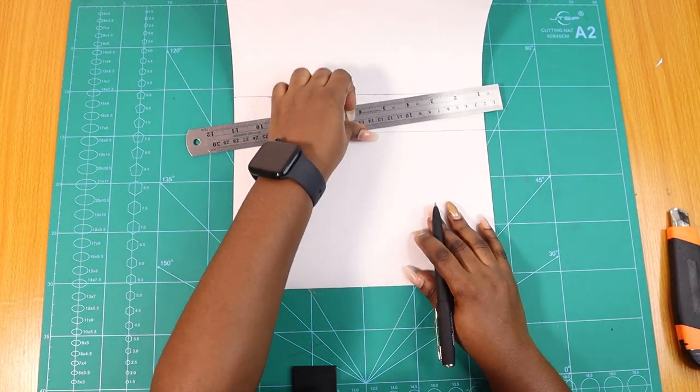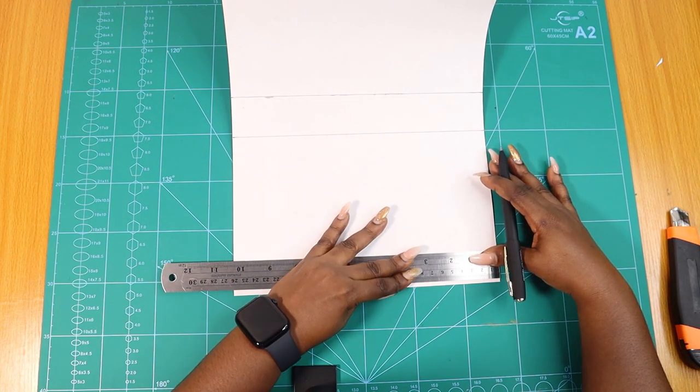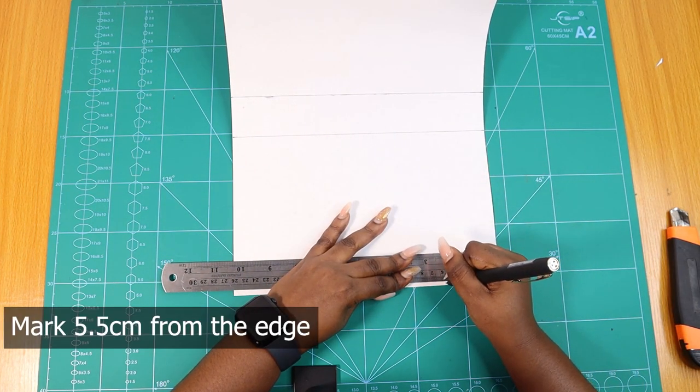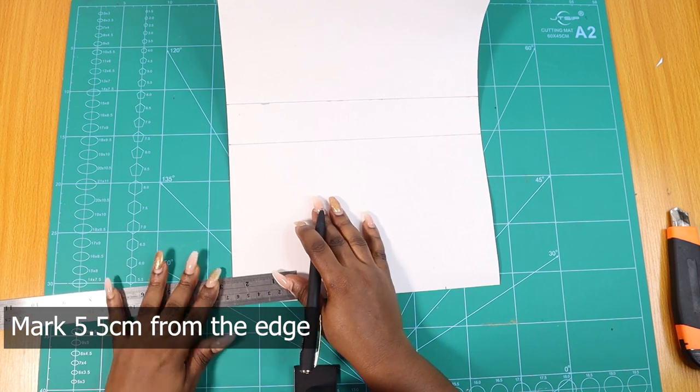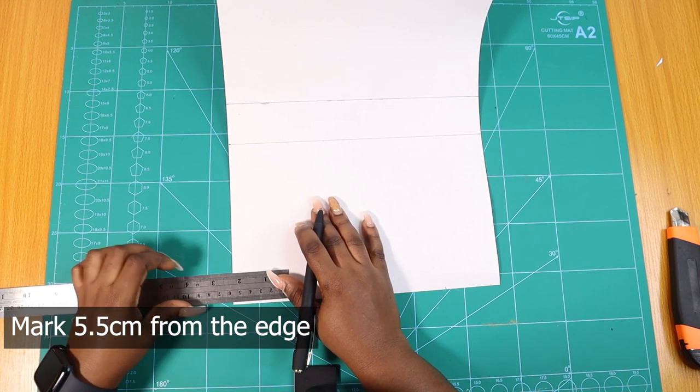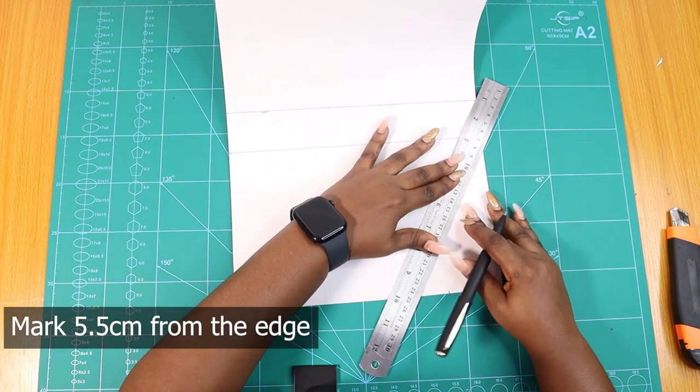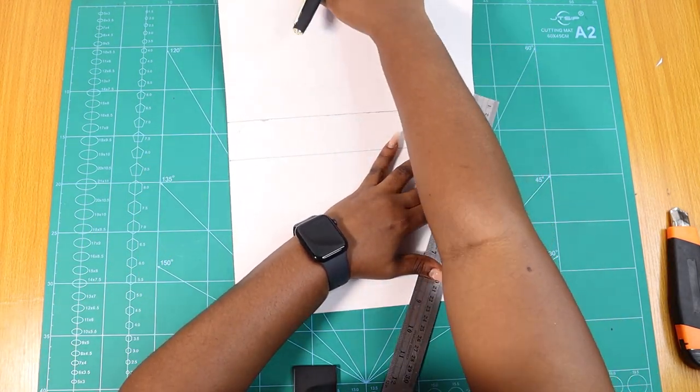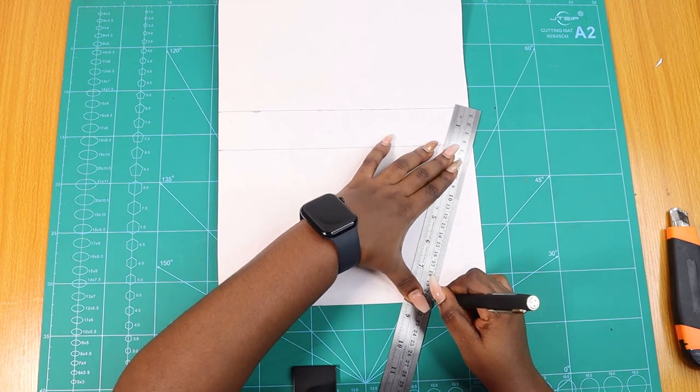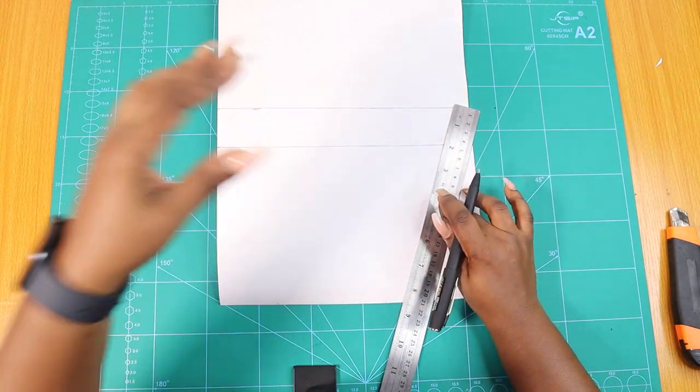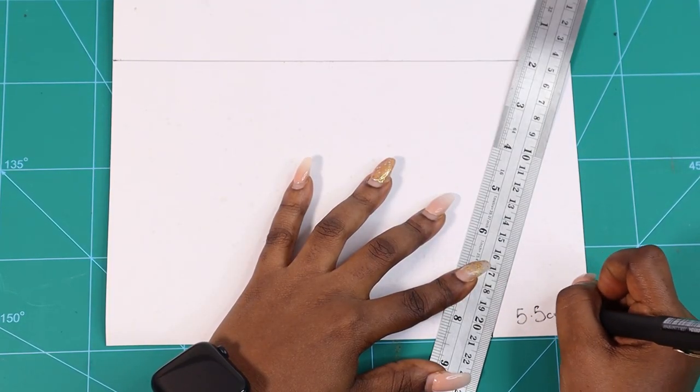Even though we haven't cut out the shape yet, this way you can tell where the flap is going to be and where the bottom and other parts are going to be. For the part where the flap is going to sit on, I'm going to mark 5.5 centimeters from both ends, and we're going to join that to the first line.